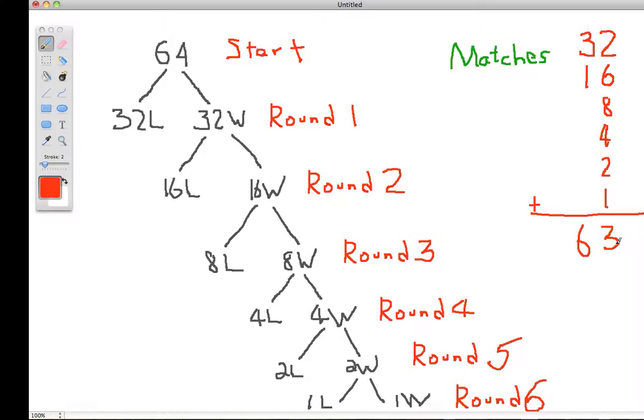Another way of looking at it is to say that in each match, there's a loser. And there are 63 losers, and each loser only loses one match and they're out. So 63 losers means there must be 63 matches.